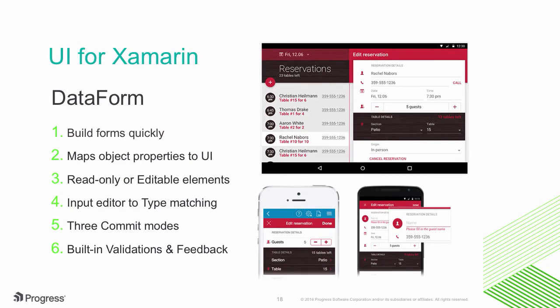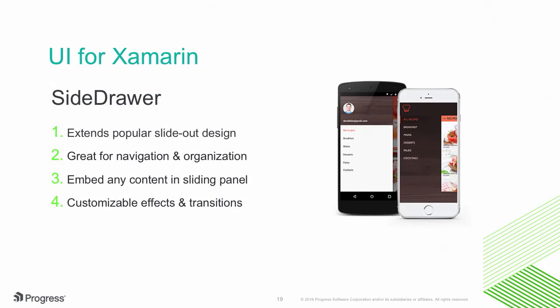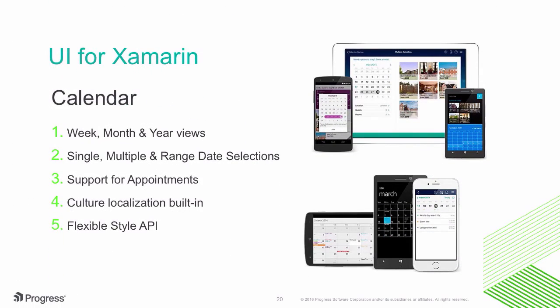There is a flexible data form that quickly maps your business object to a Forms UI. You get UI elements matched to the data types in your object, and built-in validations for data entry. There is a beautiful side drawer which helps with app organization and navigation — you can embed any content in the sliding panel with customizable effects and slide-out transitions. There is also a highly flexible calendar control with support for appointments and cultural localizations built-in. These are just a few samples of the UI controls you get with Telerik UI for Xamarin.